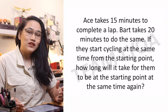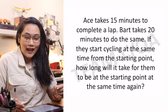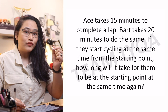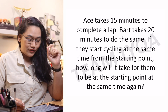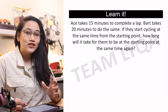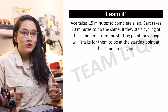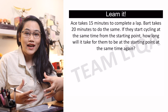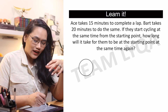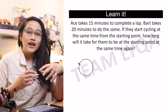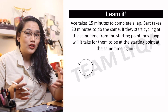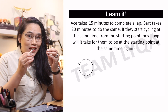In this question it says that Ace takes 15 minutes to complete a lap. Bart takes 20 minutes to do the same. If they start cycling at the same time from the starting point, how long will it take for them to be at the starting point at the same time again? To figure out that least common multiple is what we're looking for here, you need to just imagine it. Picture what's happening in the problem. If the problem involves an event that happens, and it asks you when two people doing the same action will meet at the same spot.